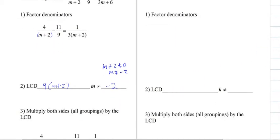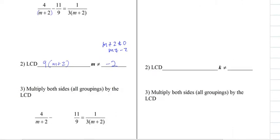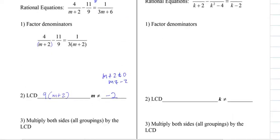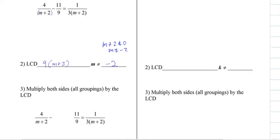All right. So now that we've factored the denominators, we've found the LCD. Now we use the LCD, and what we're going to do is multiply both sides of the equation by the LCD.